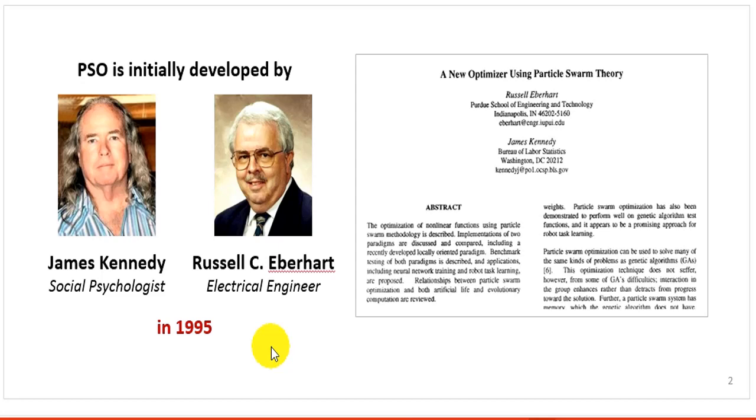Initially, the PSO was introduced by James Kennedy and Russell C. Eberhardt in 1995. Originally, they were working to develop a model to describe the social behavior of animals like flocks of birds and fish, when they realized that their model is capable of doing optimization tasks.